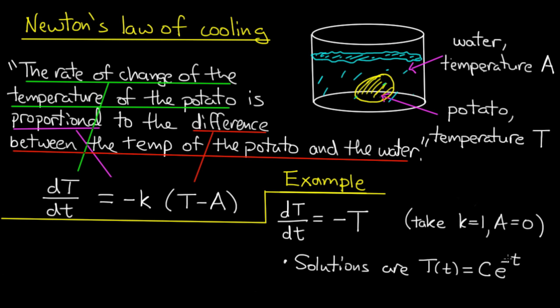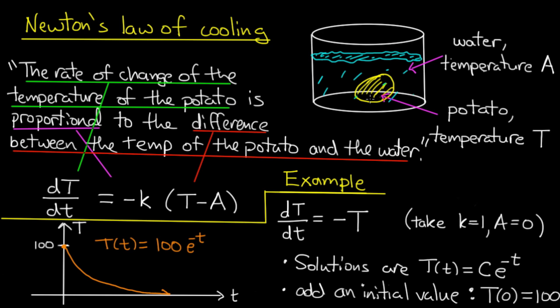Now it's not really informative to look at just general solutions. So why don't we add an initial condition? So let's imagine that we take the potato out of boiling water and then we put it in an ice bath, freezing cold water. That would mean that I have an initial condition T of 0 equals 100. 100 degrees Celsius would be the boiling water. And if I plug in that initial condition I find the value C is 100.